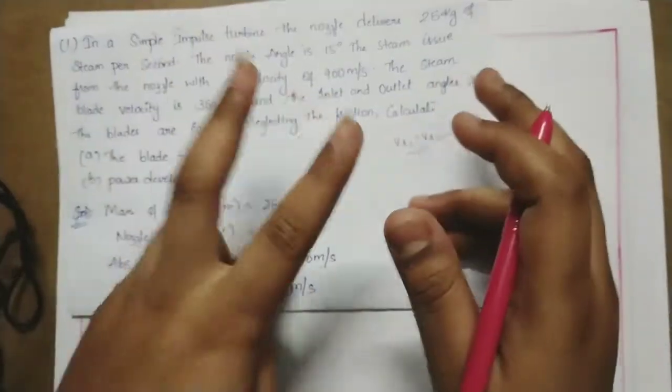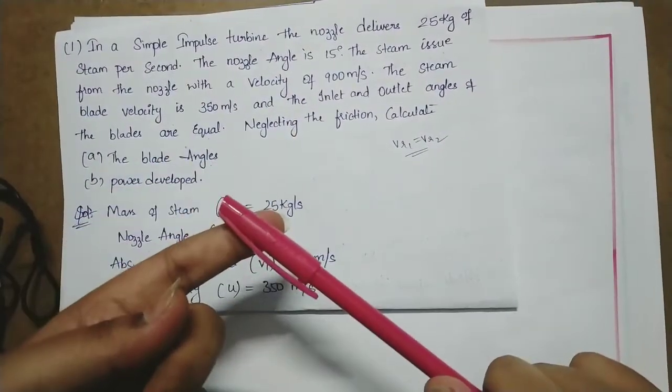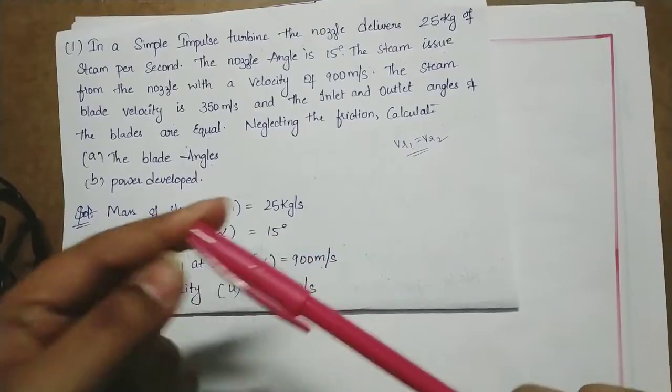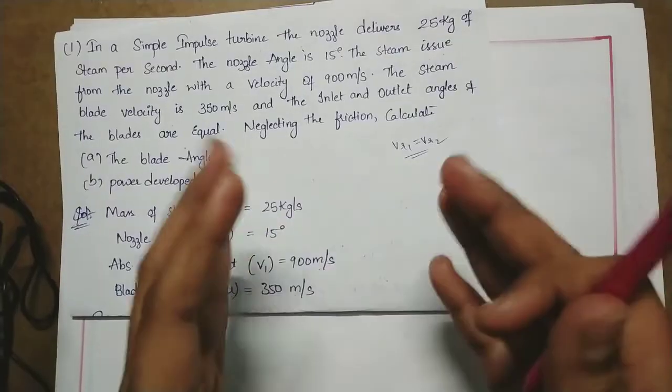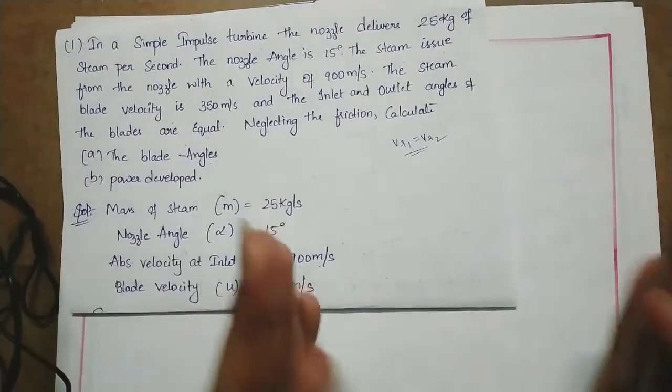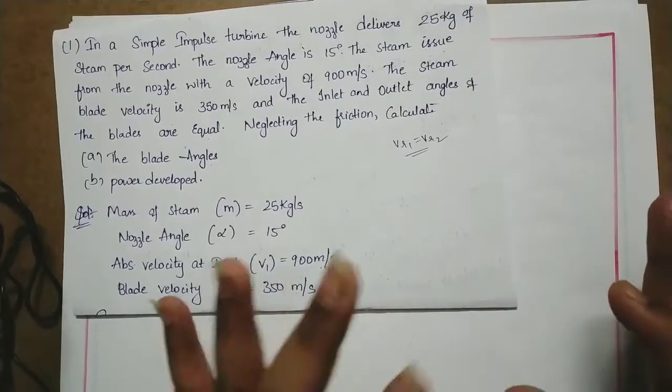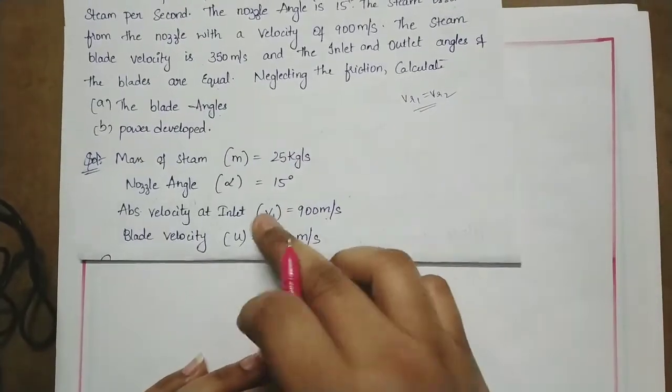This is sufficient data for finding all elements. We have two methods: analytical method and diagram method. By drawing the diagram we can find values directly, or by using sine and cosine we can also calculate. Two methods to find out.